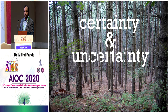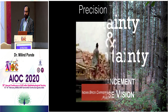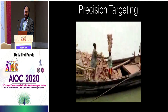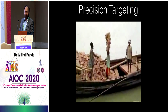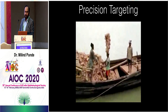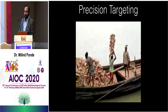We also talk to patients about the certainty and uncertainty of any surgery. The figures are: less than 5% of patients will need an enhancement, and less than 1% end up with worse vision than what they started with. A key area is biometry targeting — it has to be extremely precise in order to get presbyopia IOL patients to good outcomes.